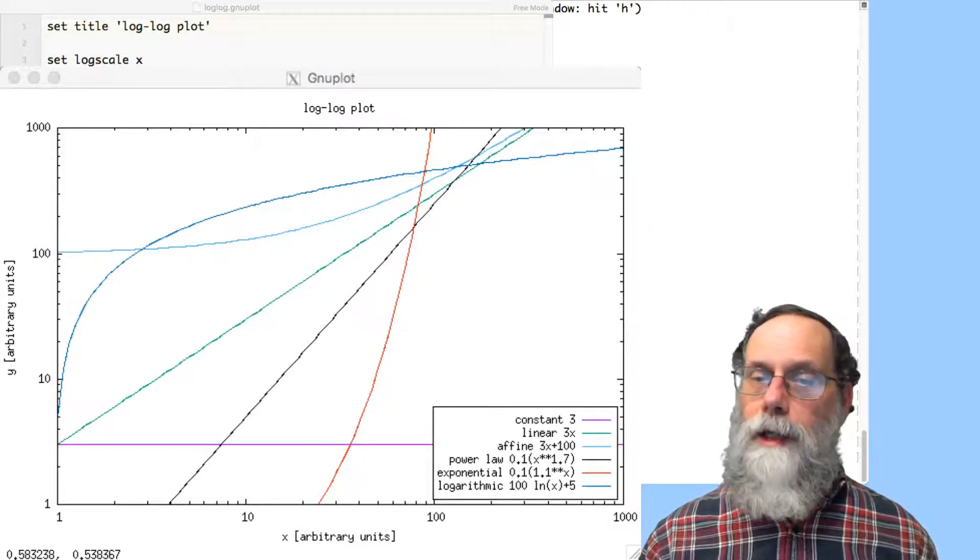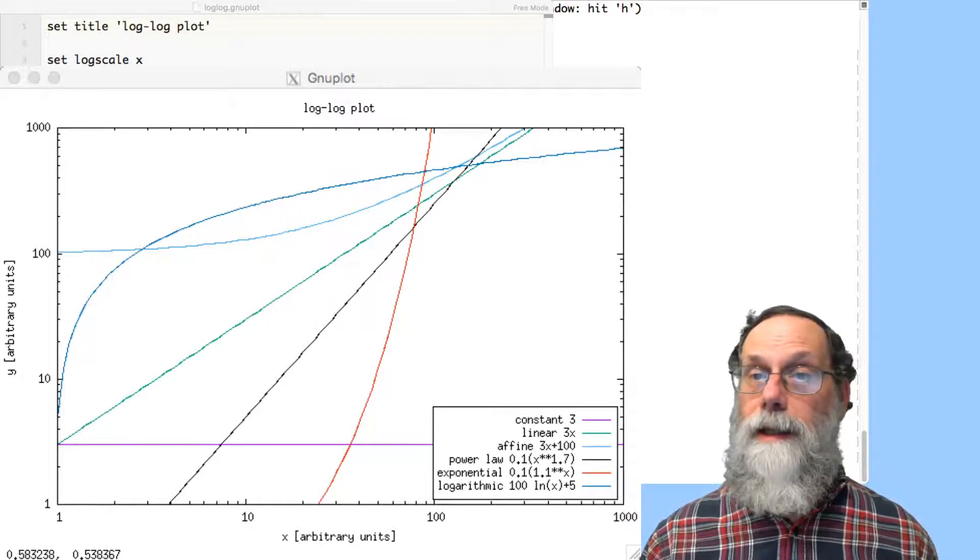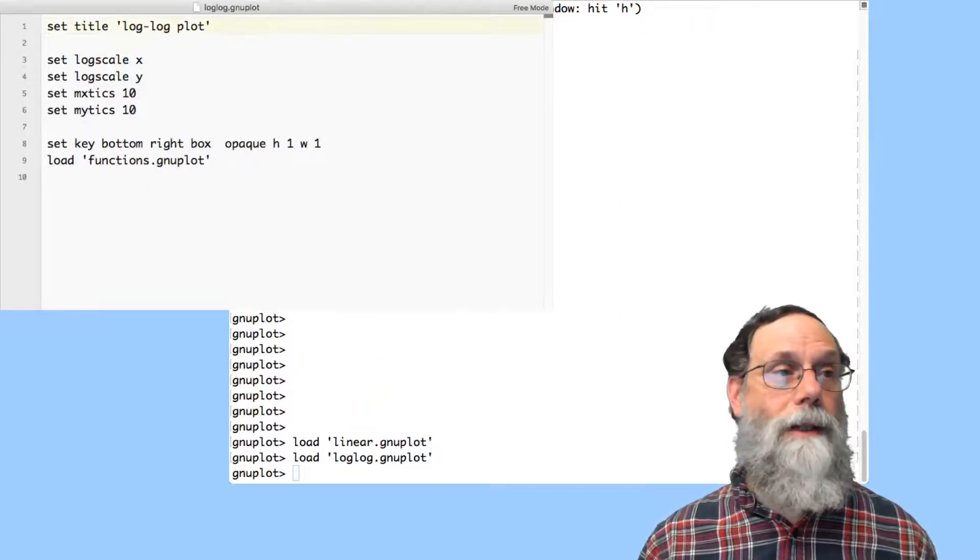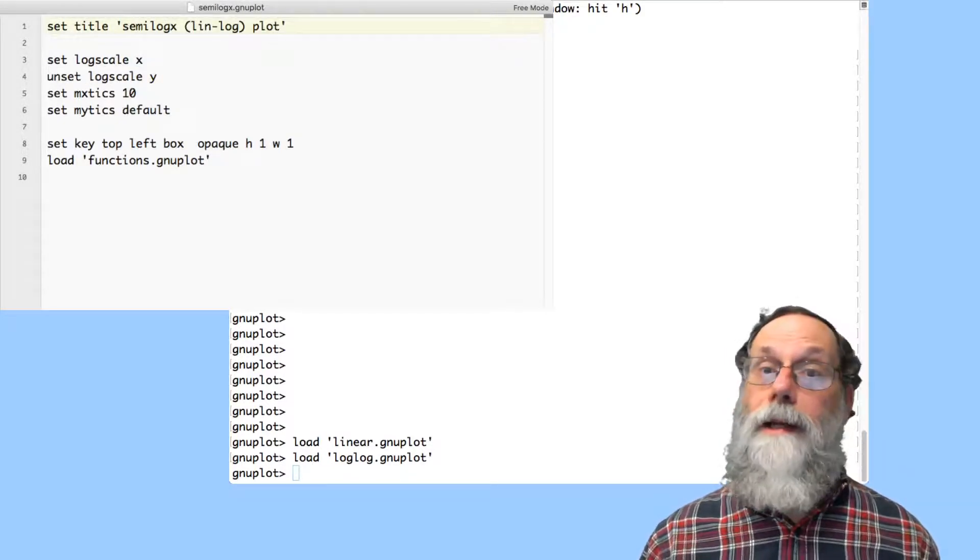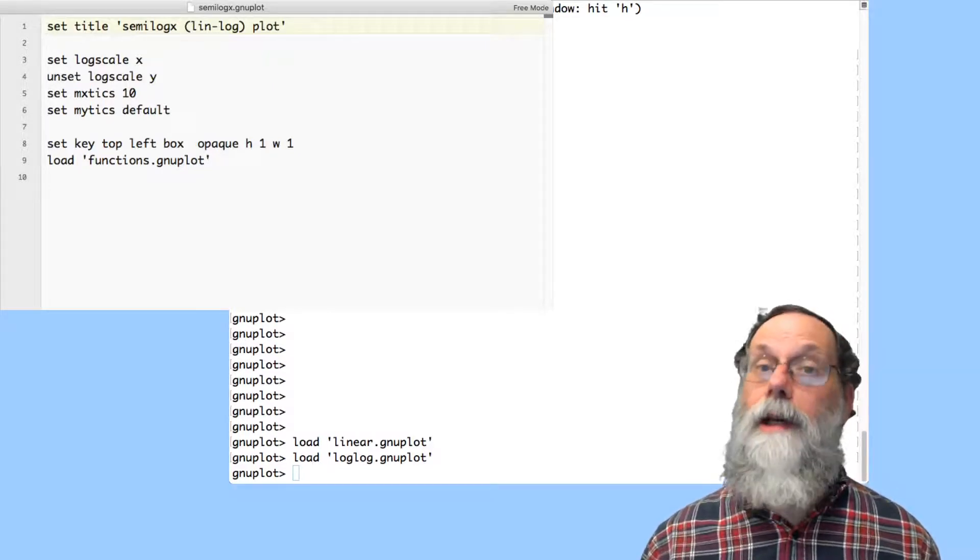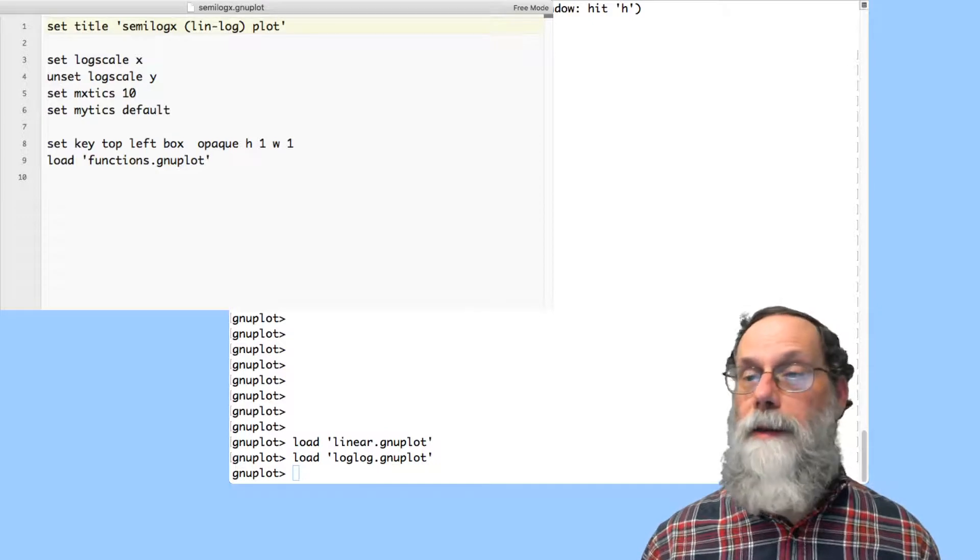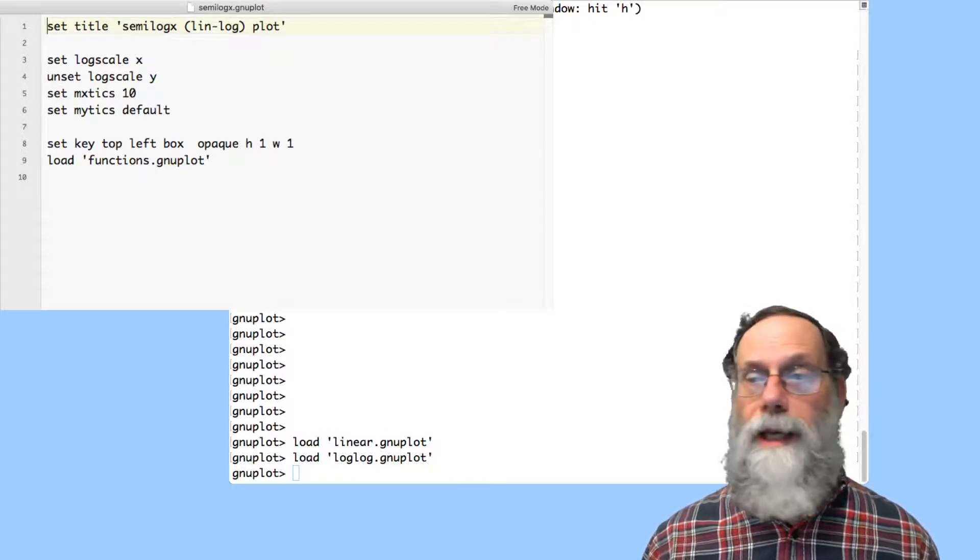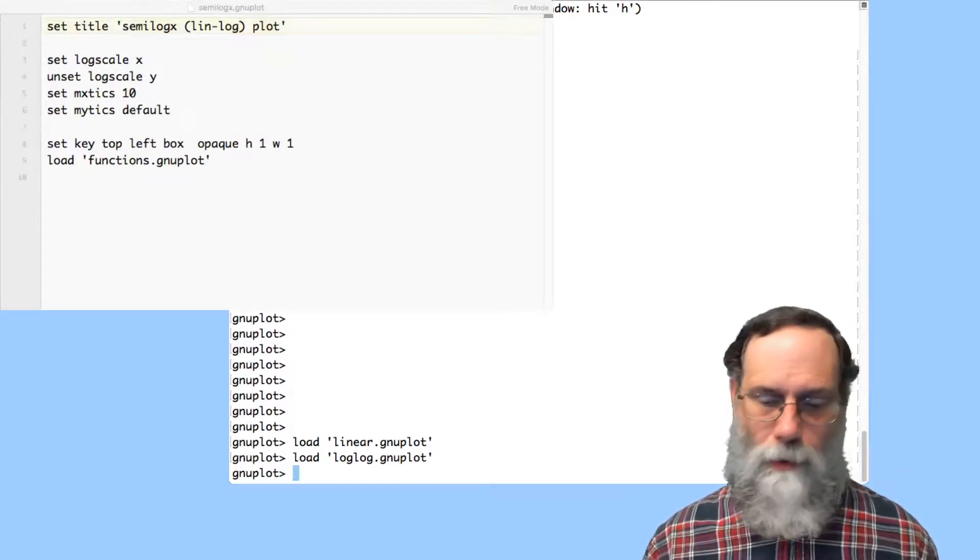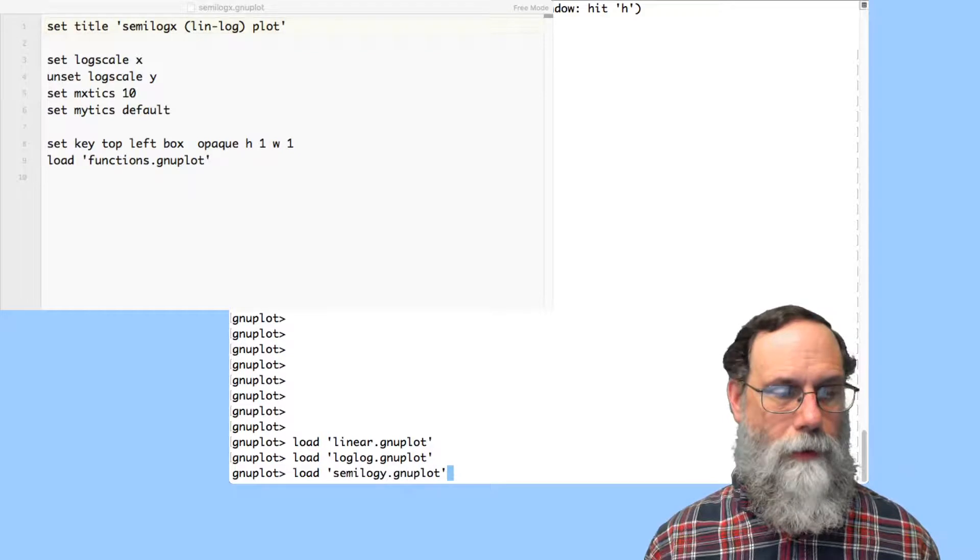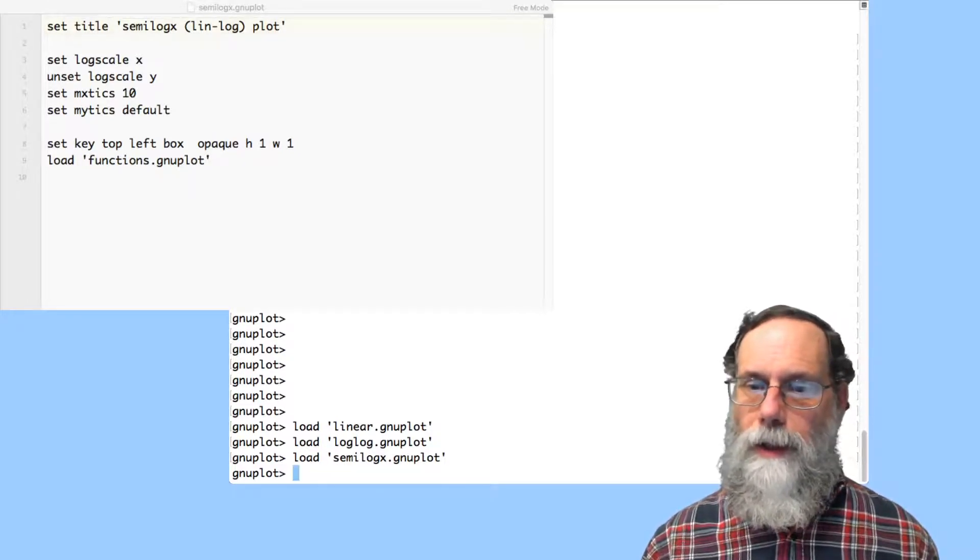We still haven't looked at how we get the exponential and the logarithmic functions to be straight lines. Let's hide this and go back to here and look at semi log x. Now in semi log x, we're going to take log scale on x, but not a log scale on y. So since the x is a log scale, we'll take minor x ticks 10 of them, but for minor y ticks we'll take whatever the default is. So we now look at semi log x. And let's take a look what that looks like.